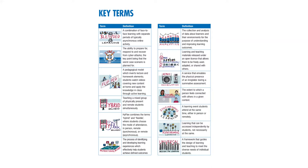So the first output from the research was a set of key terms — 13 key terms — which are now available from CDN in the form of posters. You can get A3 or A4 sized posters downloaded from the CDN website. CDN also took the nice step of engaging Visual Thinkery to produce images that are more representative of the terms.